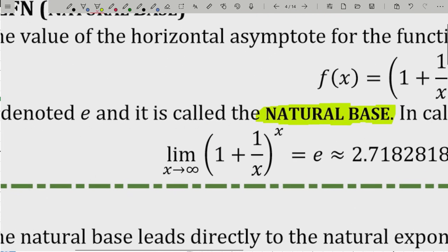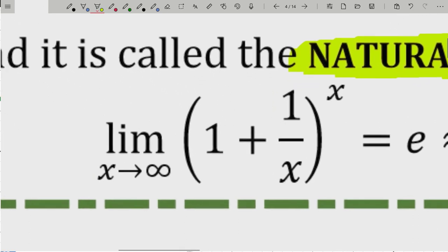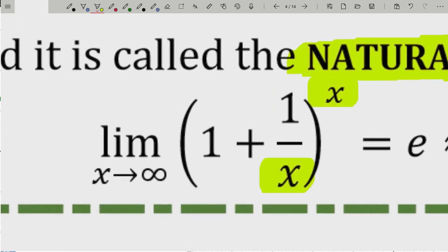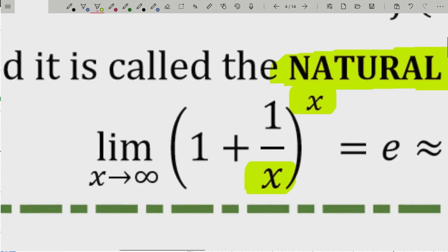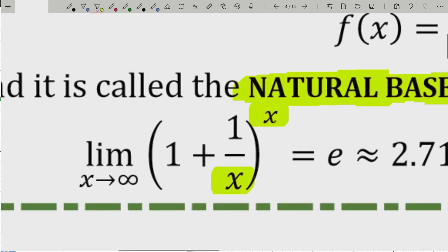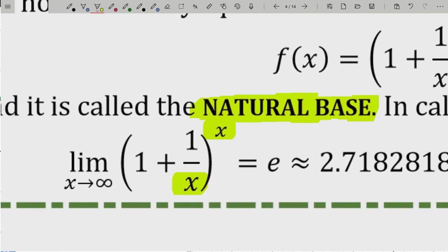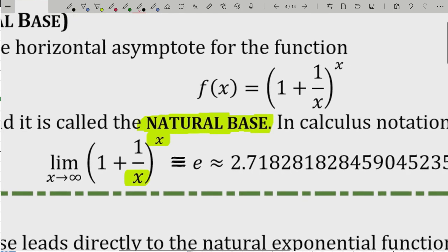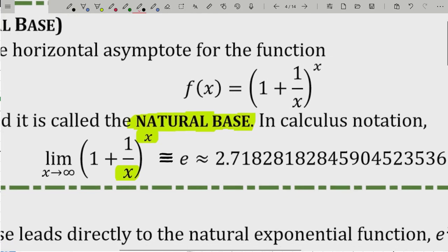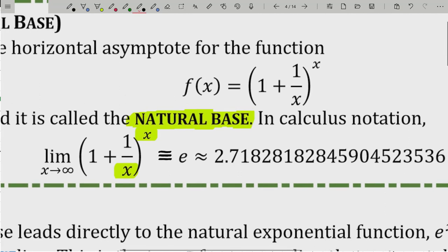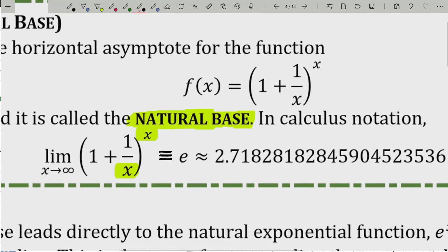We label this number e, which is also an incredibly important universal constant. It is called the natural base. In calculus notation, we write: the limit as x approaches infinity of (1 + 1/x)^x is defined to be the number e. Usually in mathematics, if you define something, it's with a triple equality. This limit equals approximately 2.71828, which we define to be e.